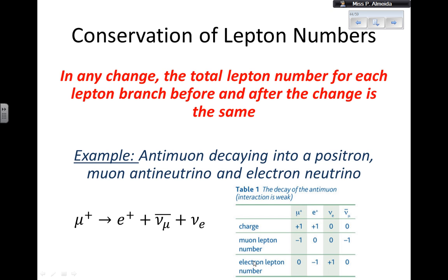Let's look at the electron lepton number. For the antimuon — nothing to do with electrons — so it's 0. For the positron, it's an antielectron, an antiparticle of the electron, so it's minus 1. For the muon antineutrino, it's 0 because it has nothing to do with electrons. And for the electron neutrino, I have plus 1 because it's a particle, not an antiparticle, and it's to do with electrons. So I have 0 in the beginning, then minus 1, 0, plus 1 — overall 0 at the end as well. So this interaction can happen for sure.